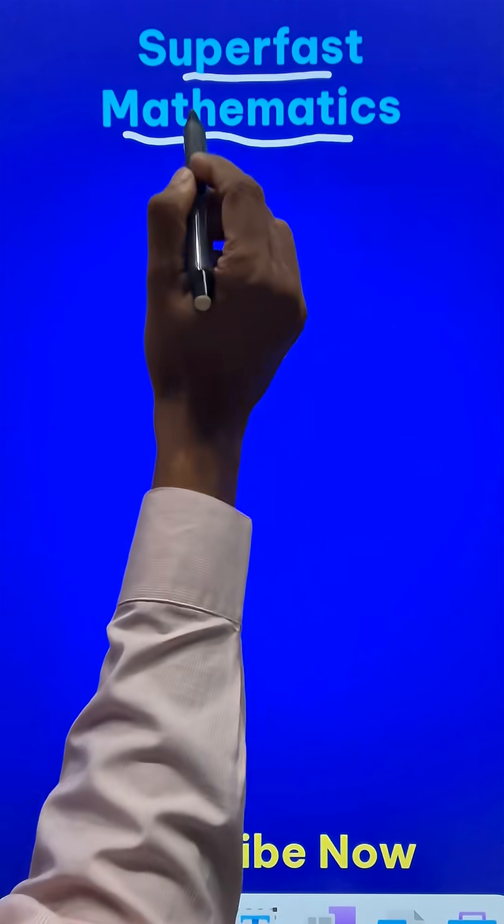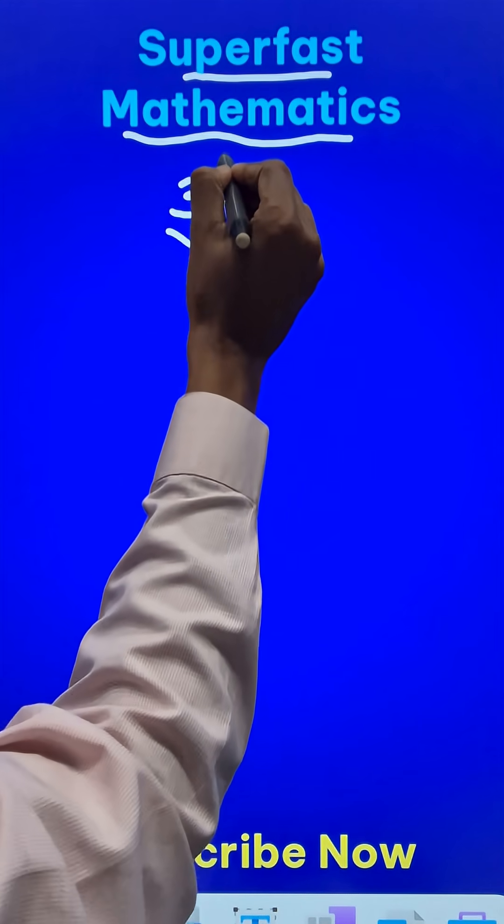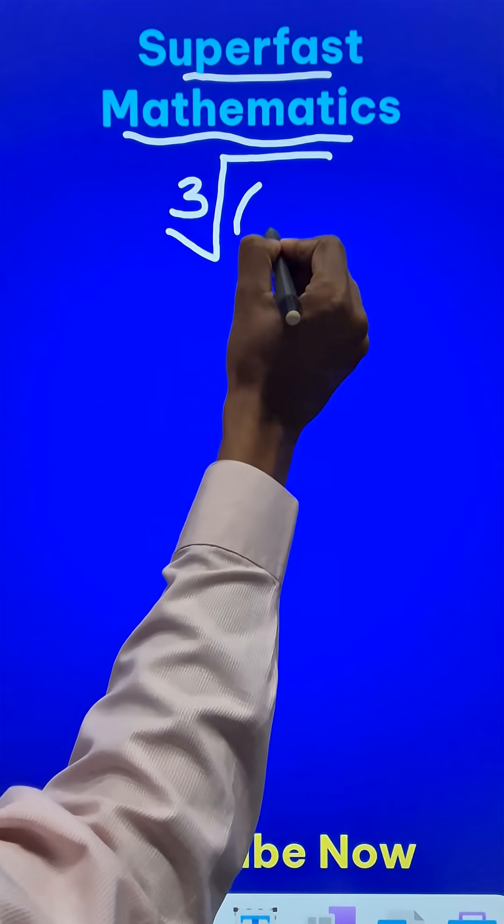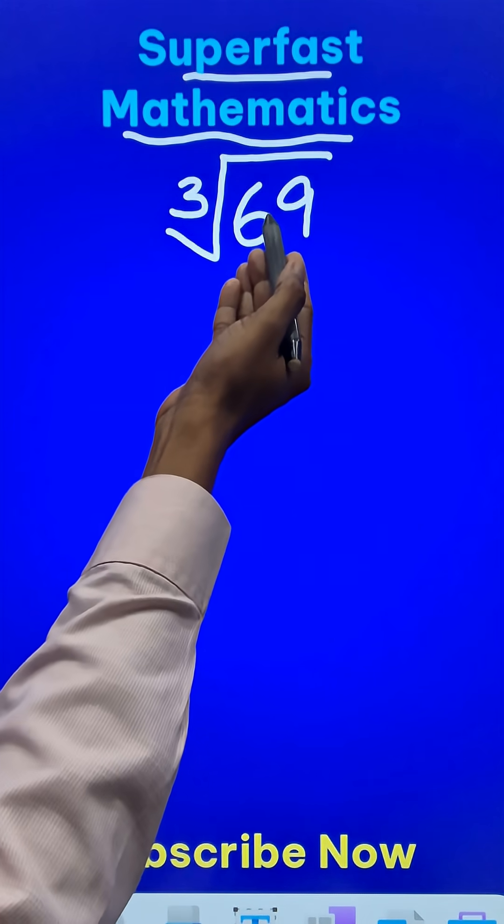Here is a super fast mathematics short trick to find the cube root of an imperfect cube number like 69. We know that 69 is not a perfect cube.